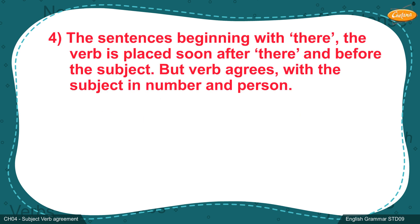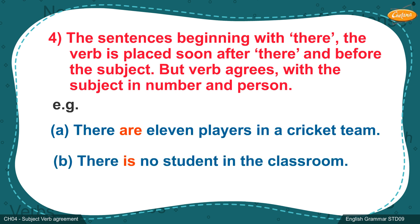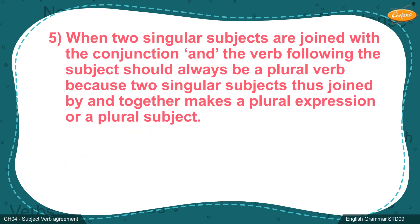Rule 4: In sentences beginning with 'there', the verb is placed soon after 'there' and before the subject. But the verb still agrees with the subject in number and person. Example A: 'There are 11 players in a cricket team.' Example B: 'There is no student in the classroom.' In these sentences, the verb is placed soon after the expression 'there' and before the subject.